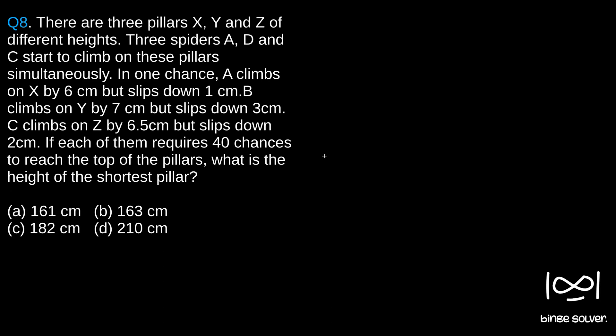So we need to find the shortest pillar. There are three pillars - I'll mark it with three lines. Let this be the first pillar X, this be the second pillar Y and this be the third pillar Z. It is of different height, we don't know which height. A climbs this, D climbs this and C climbs this.